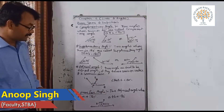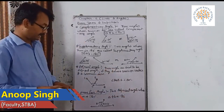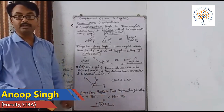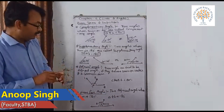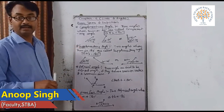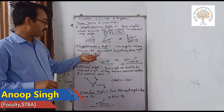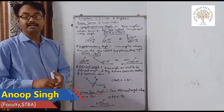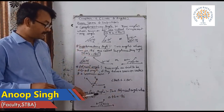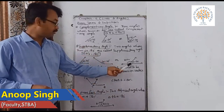Linear pair angle: two adjacent angles whose sum is 180 degrees are called a linear pair. For example, angle A plus angle B equals 180 degrees, where angle A is 60 degrees and angle B is 120 degrees. The difference between supplementary angles and linear pair: in a linear pair both angles must be adjacent, but in supplementary angles they can be adjacent or different.